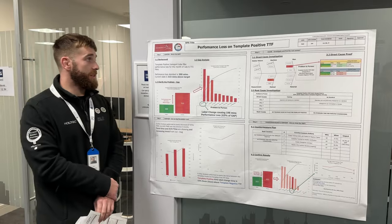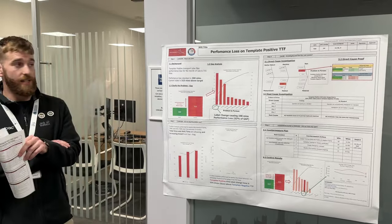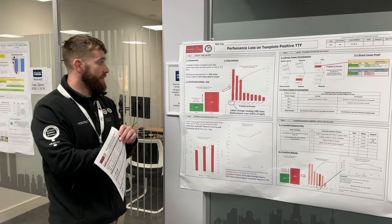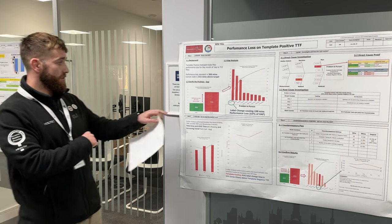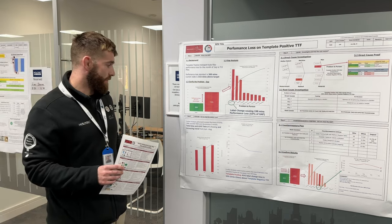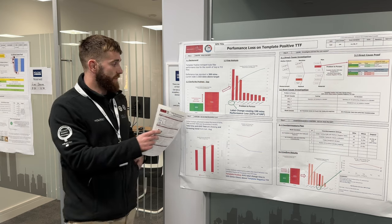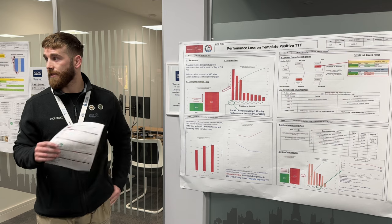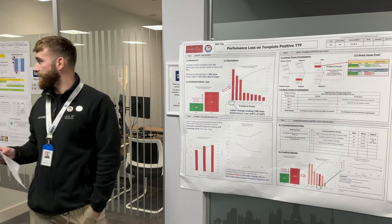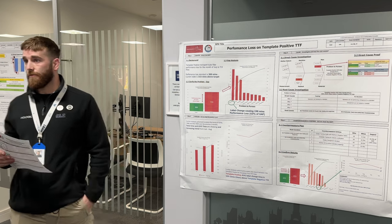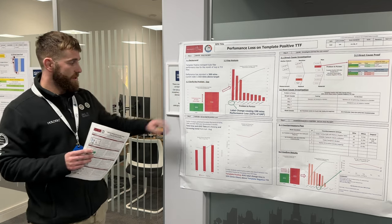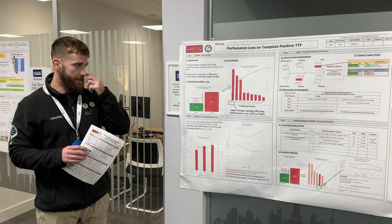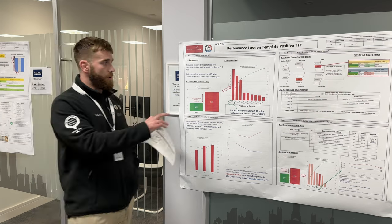I did my rapid problem solving on the template positive line. Like Jack, the reason being there's a lot of data - Jack focused on rejects, I looked at downtime. My current downtime for June was 715 minutes. We didn't have a clear target, so we got together with the teams and agreed 15 minutes a day would be good - 300 minutes over the month as our standard. We have a performance loss gap of 350 minutes.